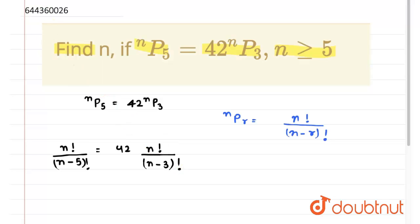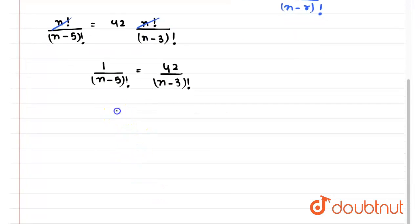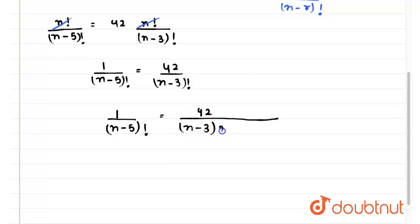From here, we can cancel n factorial on both sides. So we get 1 upon (n minus 5) factorial is equal to 42 upon (n minus 3) factorial. Now if we expand (n minus 3) factorial, we have 1 upon (n minus 5) factorial is equal to 42 times (n minus 3) into (n minus 4) into (n minus 5) factorial. From here, we can cancel (n minus 5) factorial.